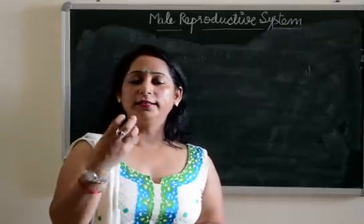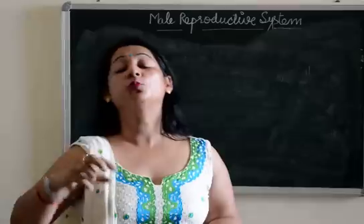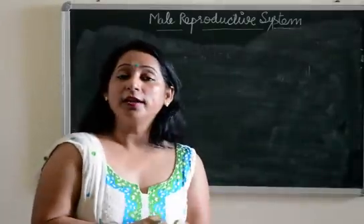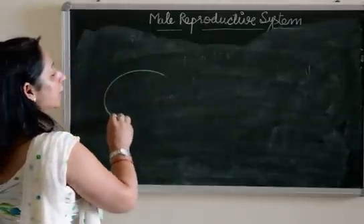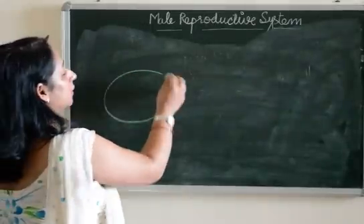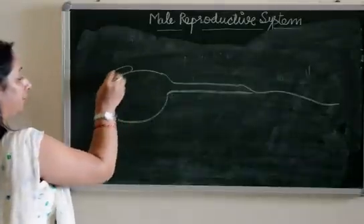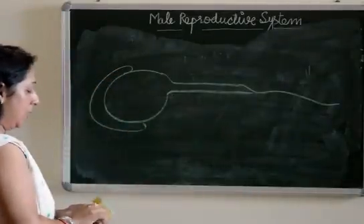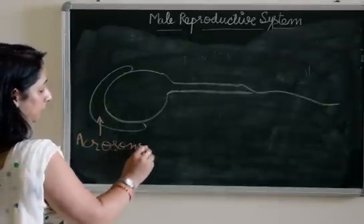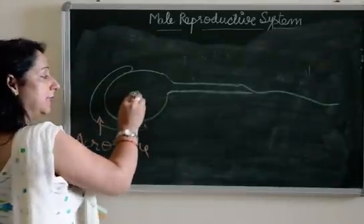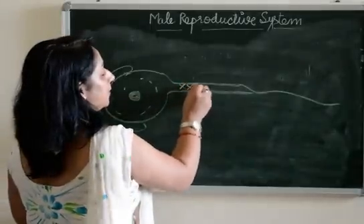You must know the characteristics of sperm which enable it to undergo the process of reproduction. When we see the structure of sperm, we observe that the sperm is basically divided into three parts: the head, the middle piece, and the tail. The head has an acrosome, a nucleus in the center, and is filled with cytoplasm.